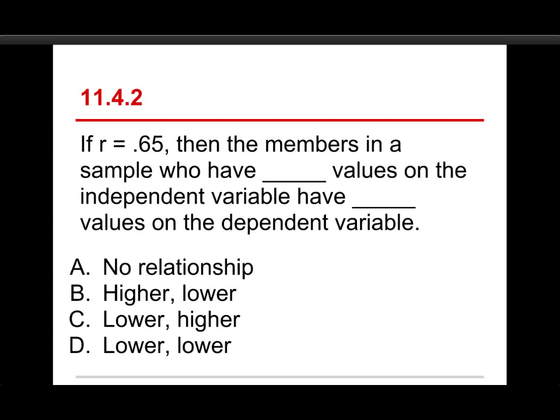If R equals .65, then the members in the sample who have blank values on the independent variable have blank values on the dependent variable.